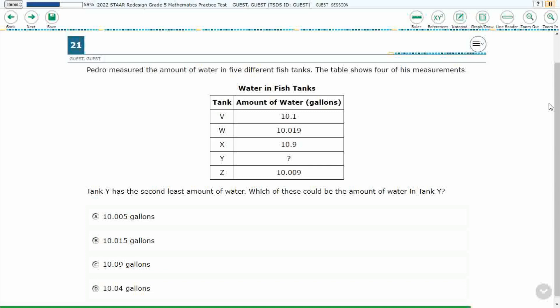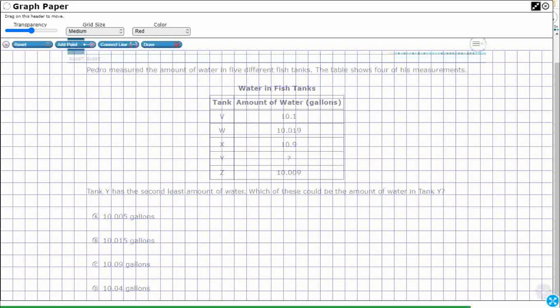So, we have got some fish tanks, and the table shows four of its measurements. And look at this, tank Y has the second least amount of water. That's kind of a strange way to write that. So let's open up our graph draw feature so we can draw all over this.